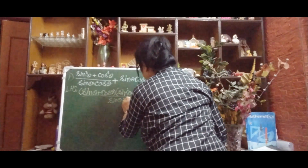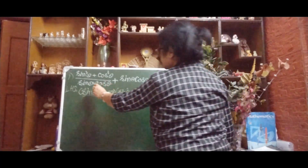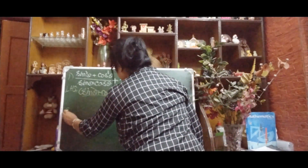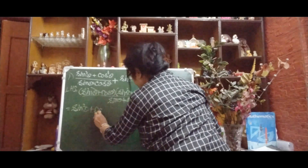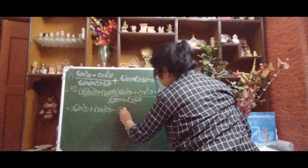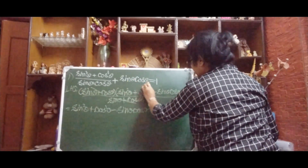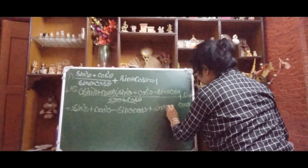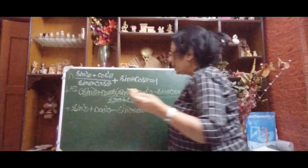I have noticed that sinθ + cosθ in the numerator and sinθ + cosθ in the denominator will cancel. So after cancellation we have sin²θ + cos²θ − sinθcosθ, plus sinθcosθ. Now you can see that −sinθcosθ and +sinθcosθ cancel each other.